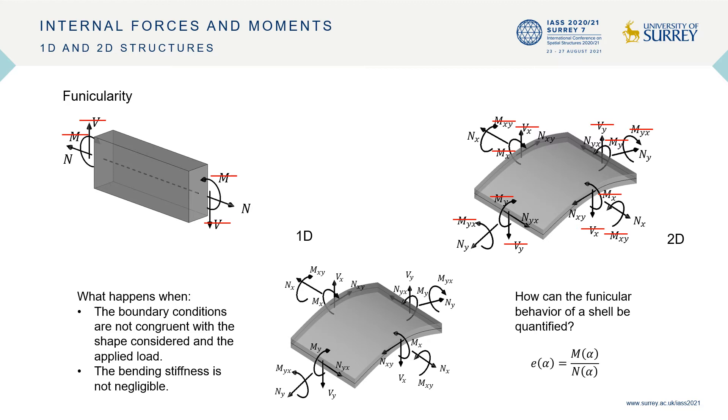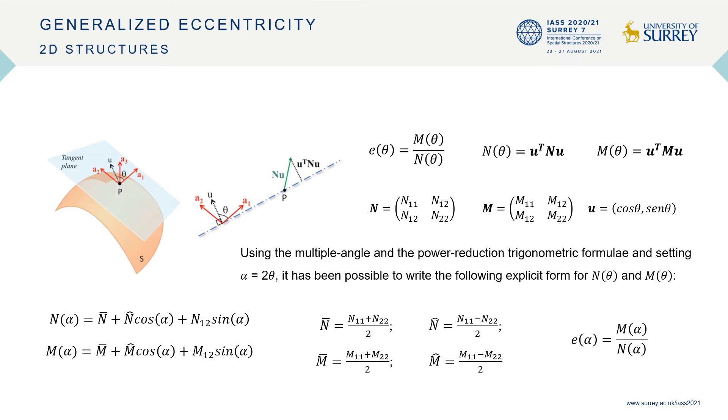In these cases, the bending actions have to be considered and a proper generalization of eccentricity to 2D structures can be used to quantify the funicular behavior of shells. In order to better understand the meaning of the generalized eccentricity, we can consider a generic shell. For each point belonging to its surface, we are able to evaluate the generalized bending moments and membrane forces, whose ratio gives the generalized eccentricity.